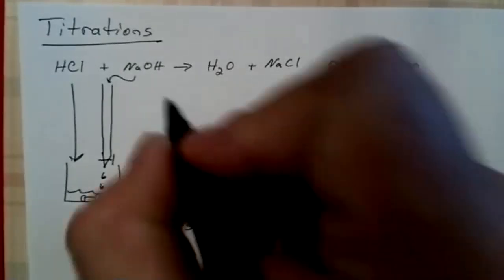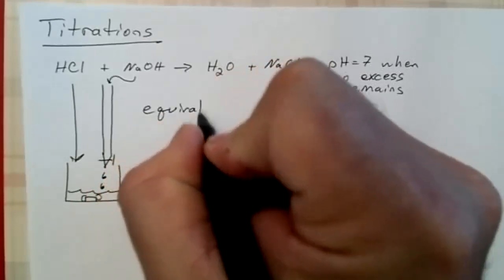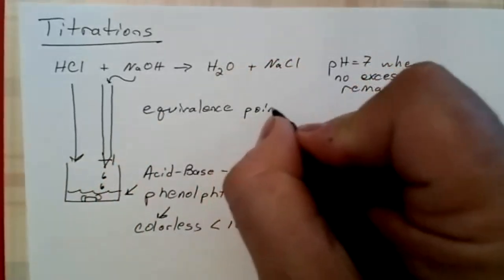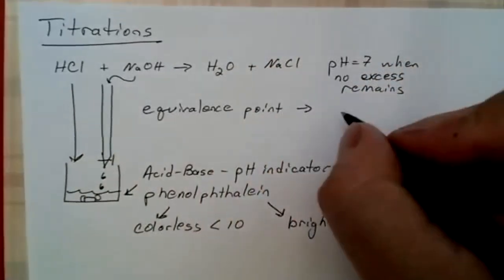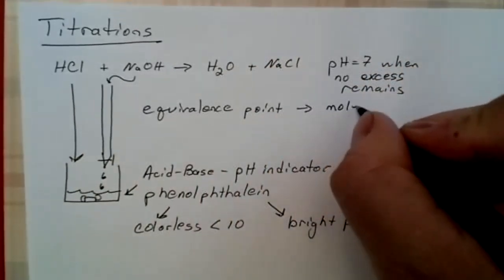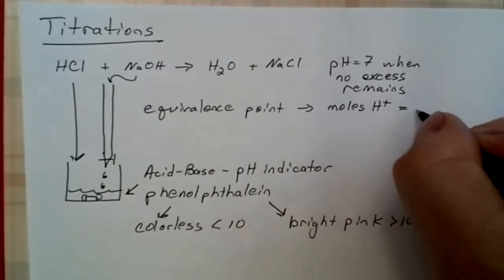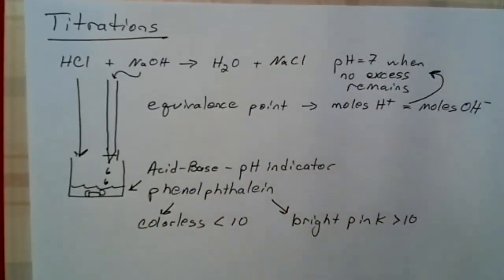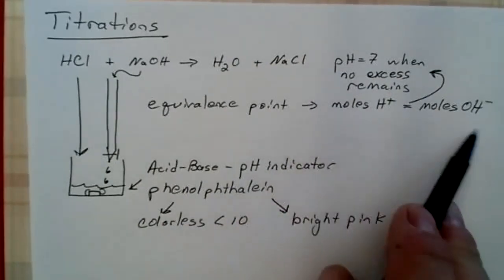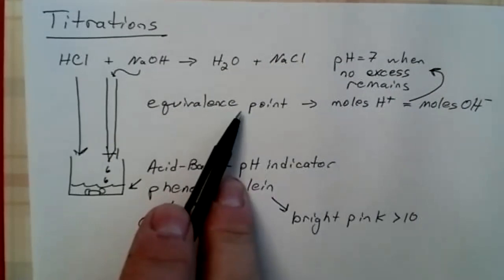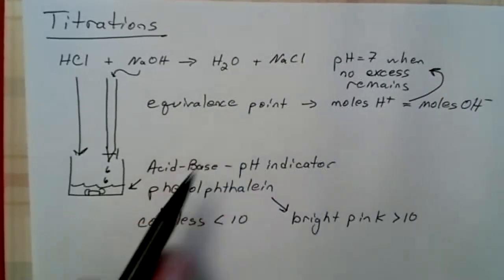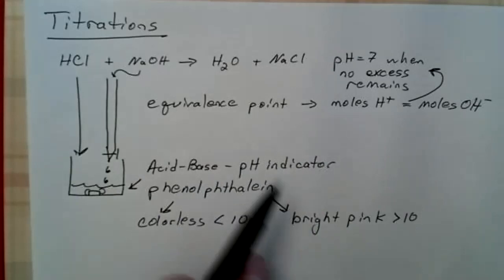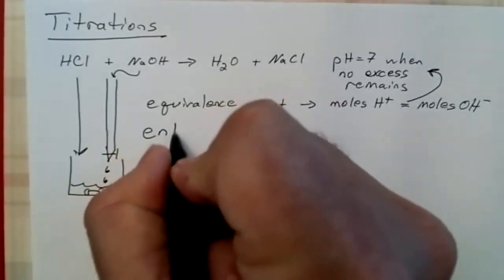When we do titrations, there are really two points. There's the equivalence point where moles of H+ exactly equal moles of hydroxide. If that's true, then that's a neutral solution in the case here with HCl and NaOH. For other reactants, it might not be neutral. So our acid and our base are exactly equal at the equivalence point. But for us to stop the titration, we're using this indicator. When we stop the titration, that's called an endpoint. The endpoint is where a sharp change is observed.